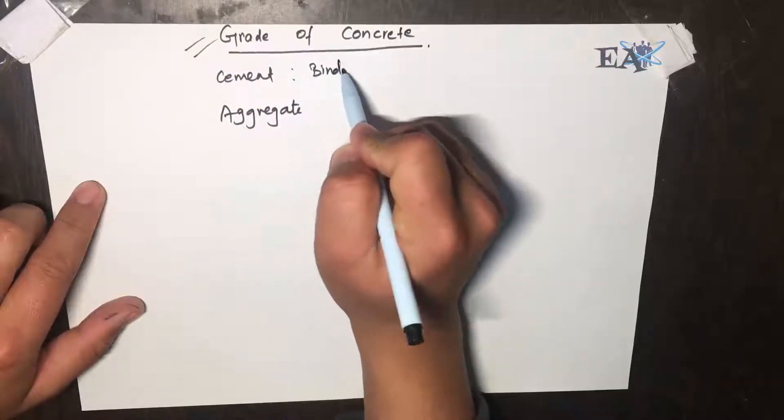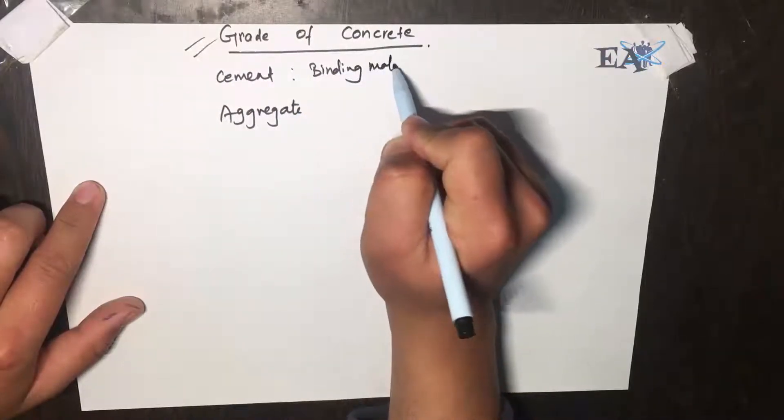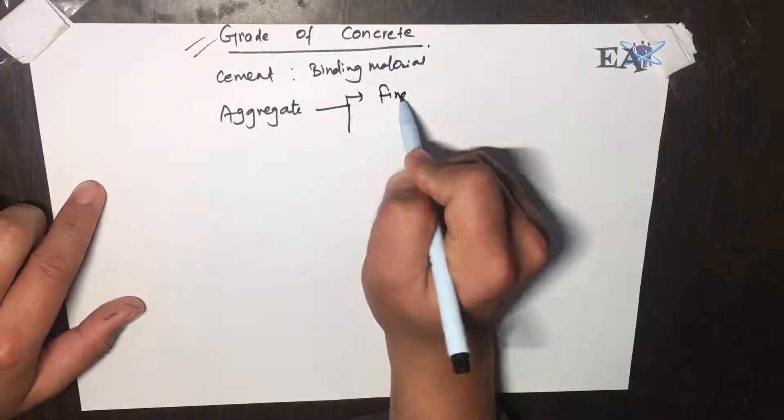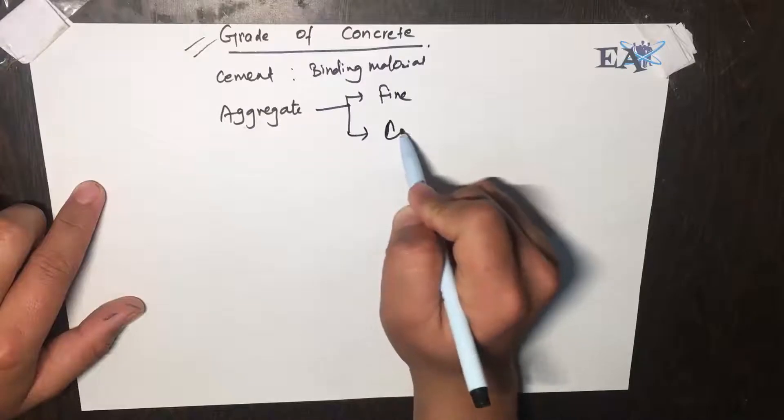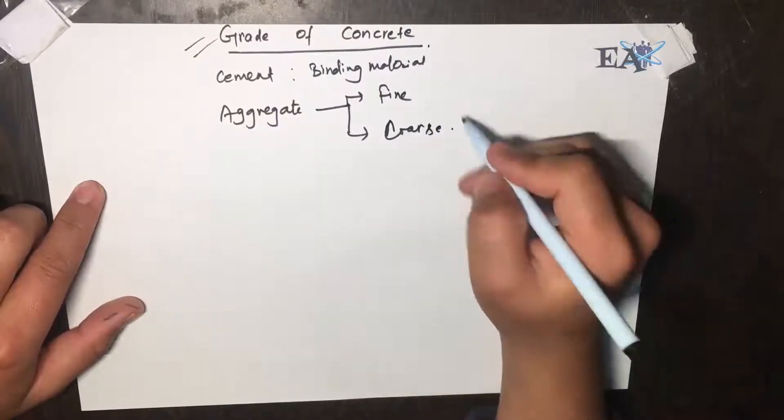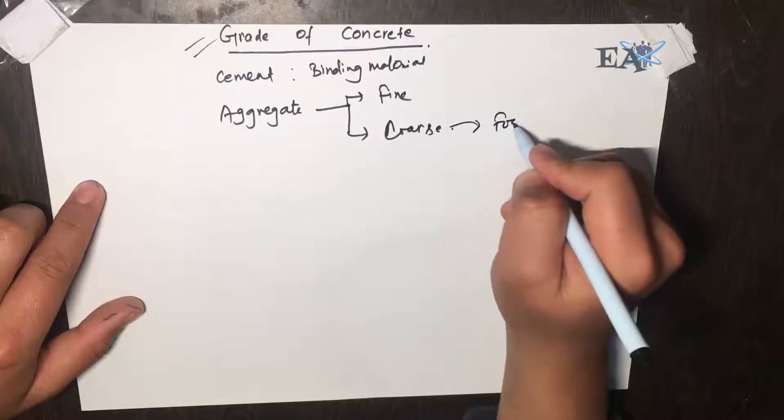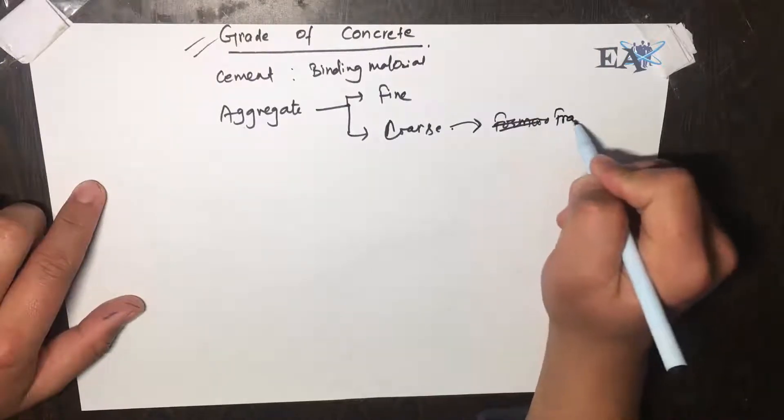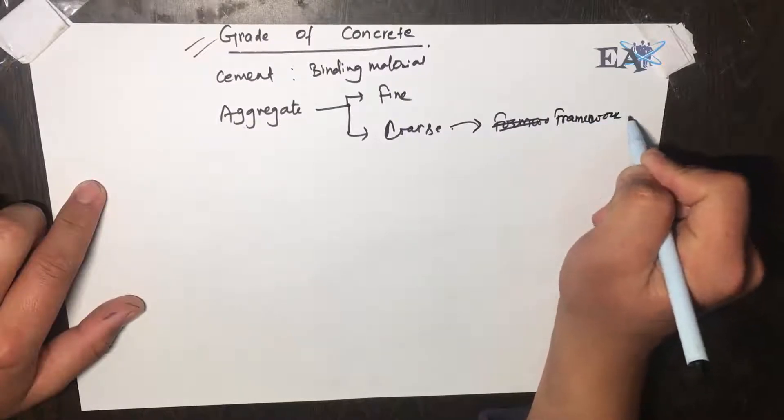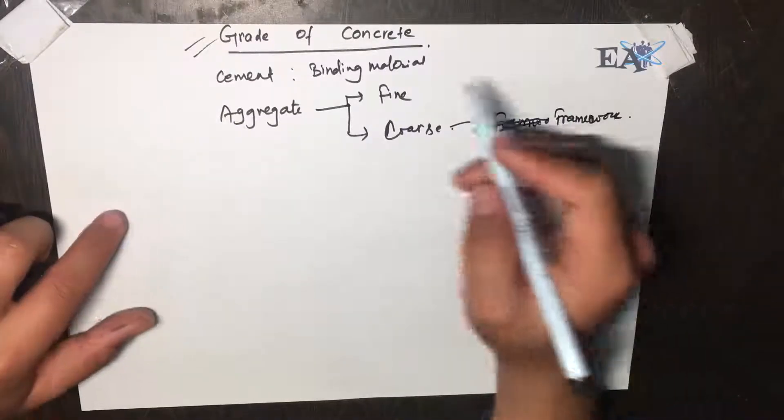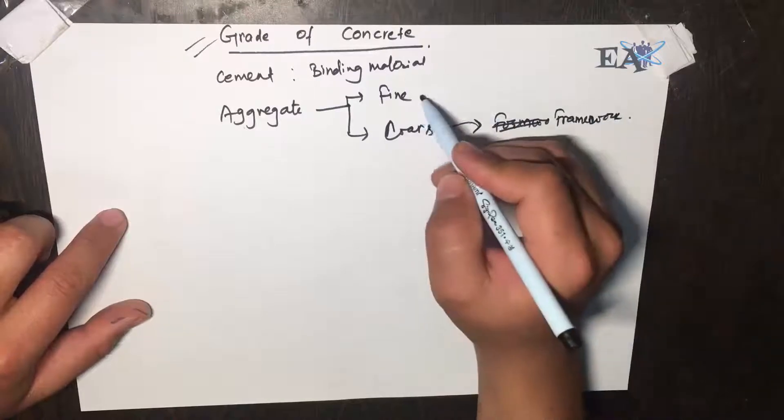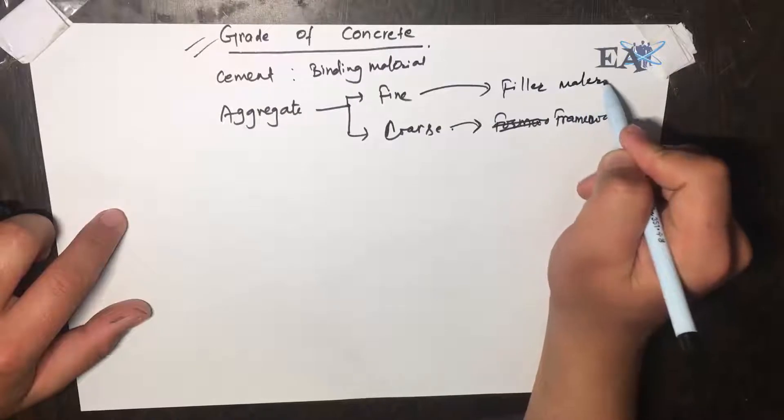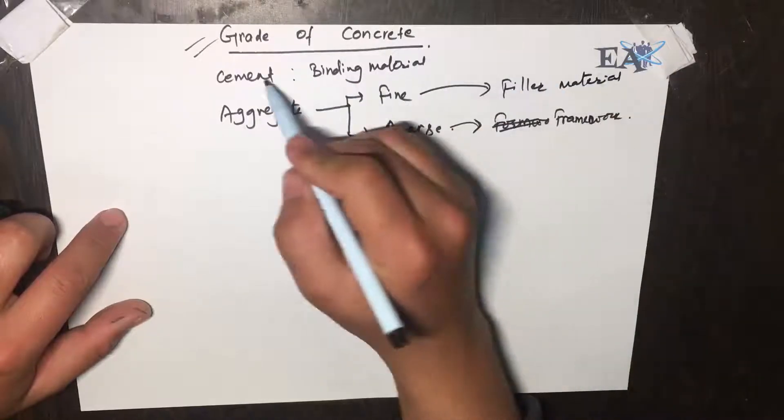as the binding material. And the aggregate—we got two kinds of aggregate, one is fine and another is coarse. The coarse aggregate forms the basic framework of the concrete, and the fine aggregate acts as the filler material and along with the cement it forms the binding material as well.